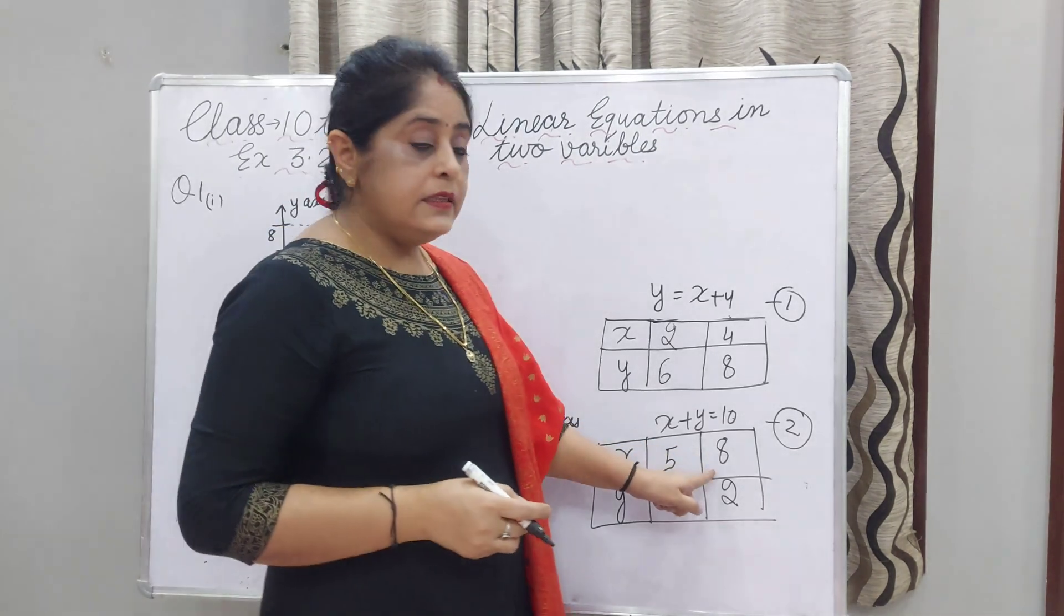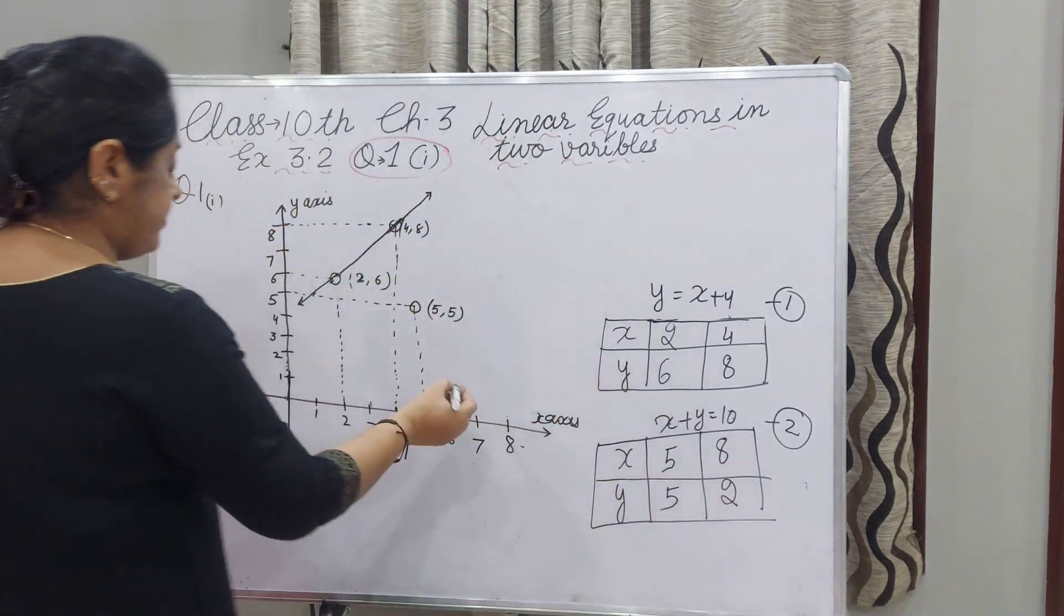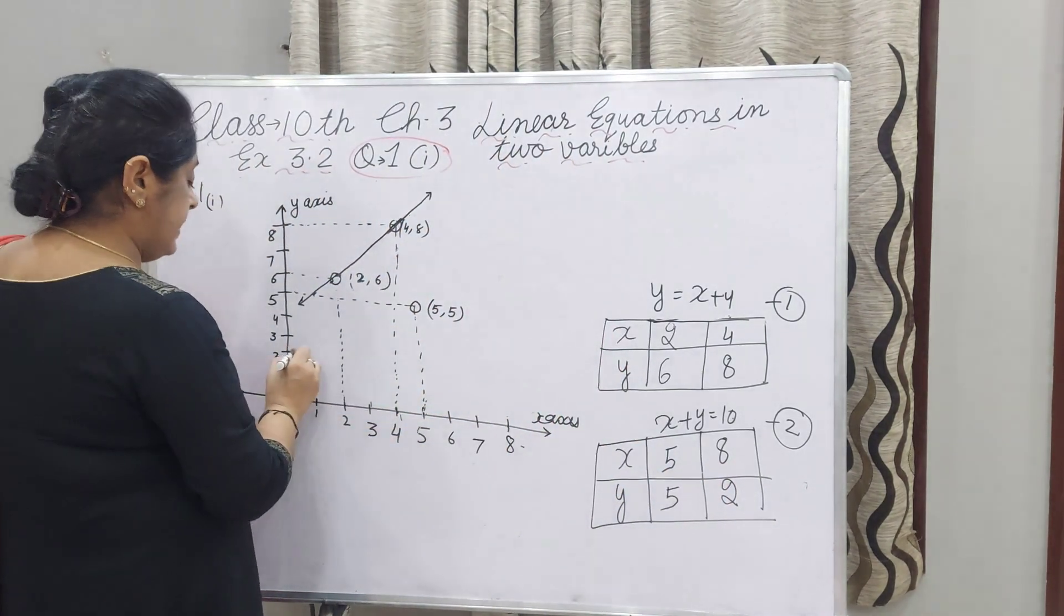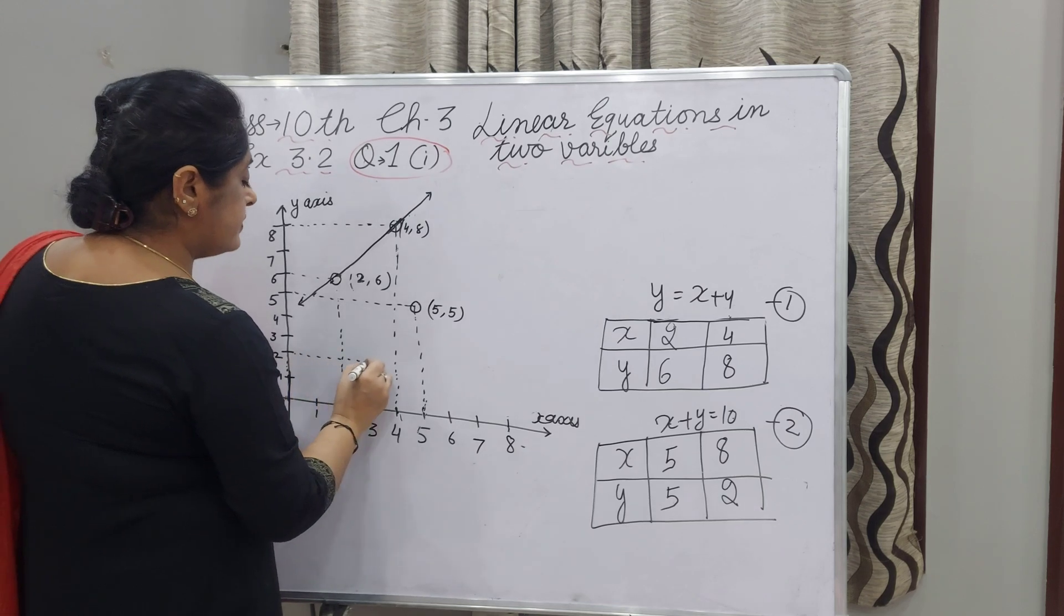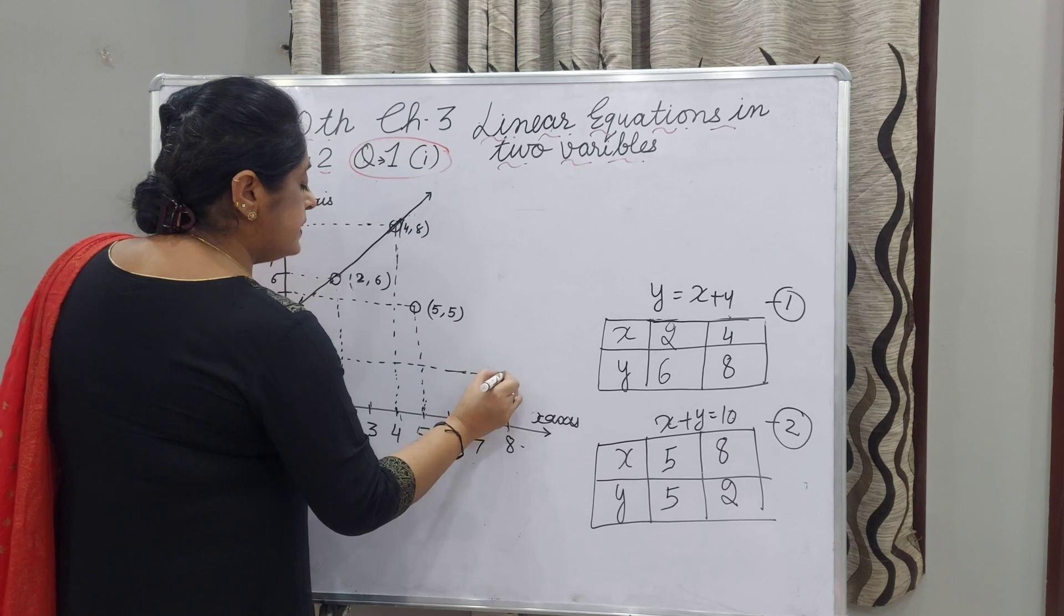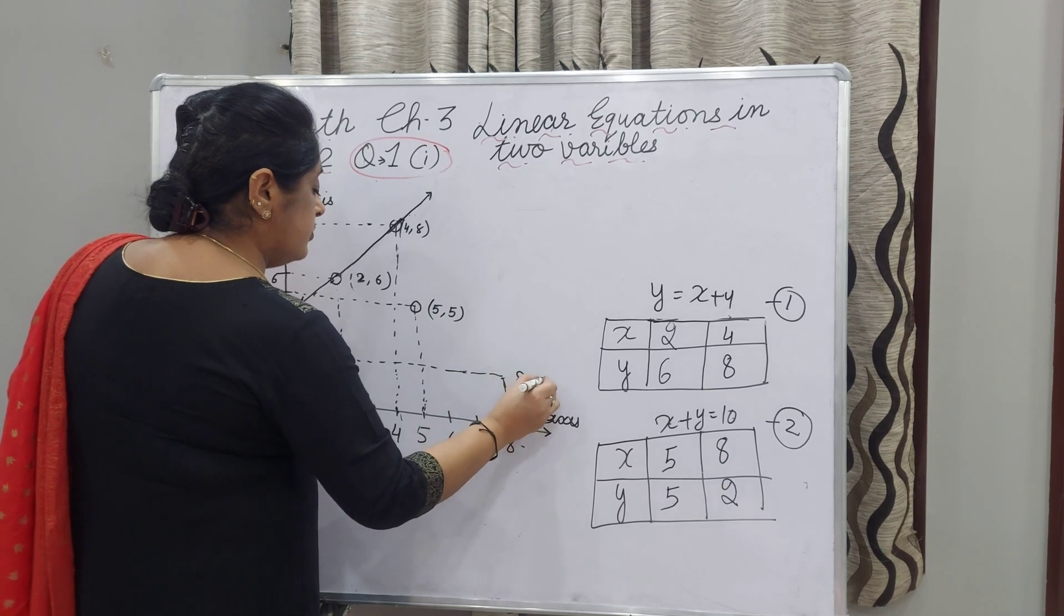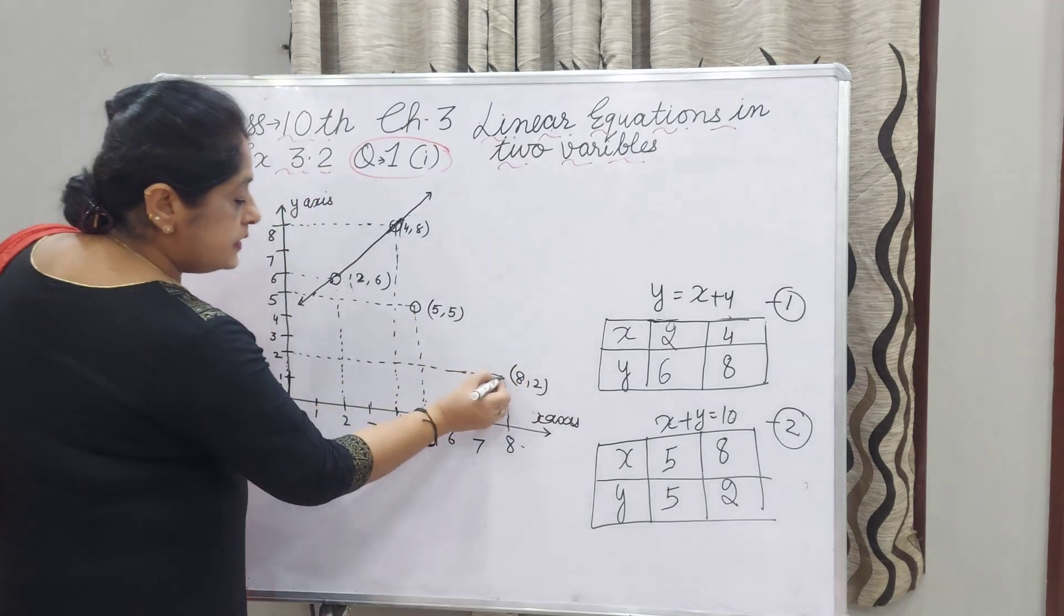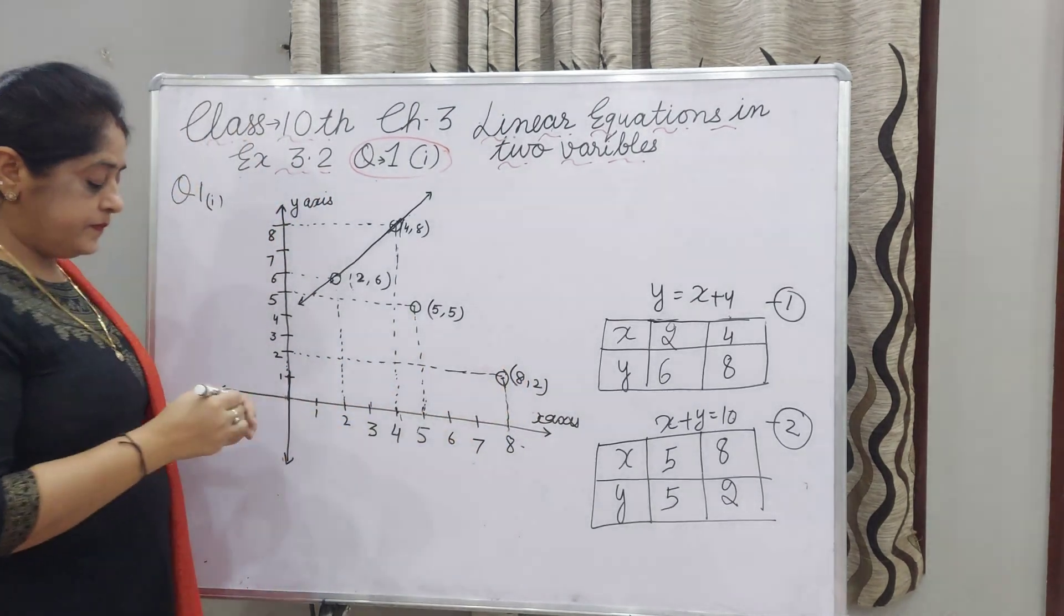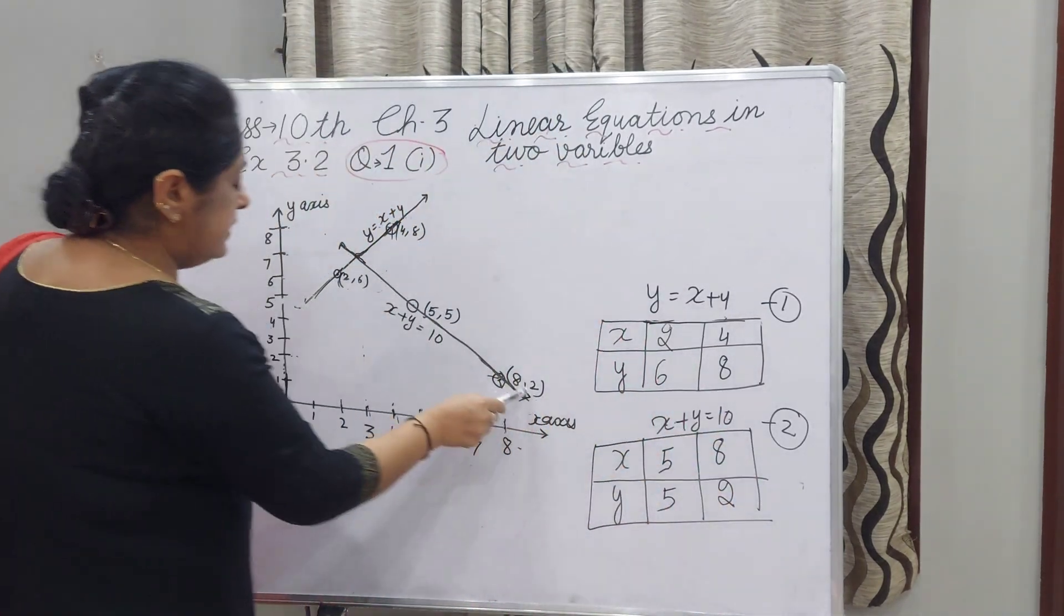Now we will draw the second point: X is 8 and Y is 2. Both lines are perpendicular to each other. Now I have joined these two points and drawn this line.